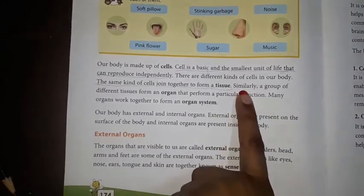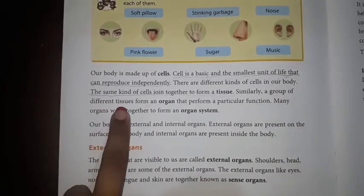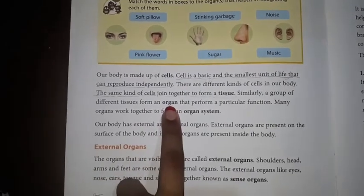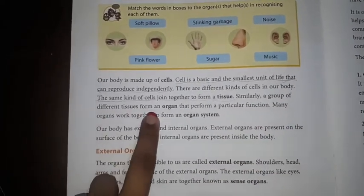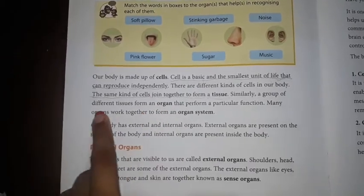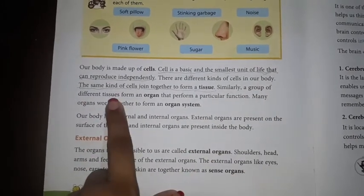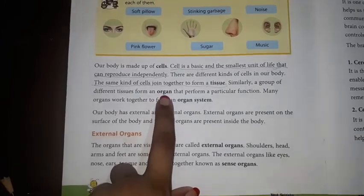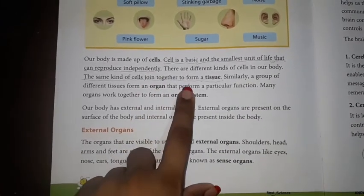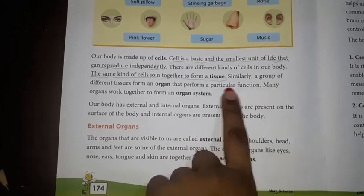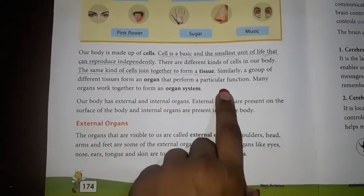Similarly, read with me: a group of different tissues form an organ. A group of different tissues form an organ.